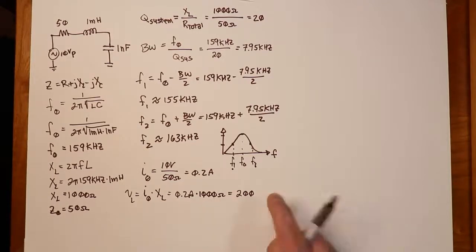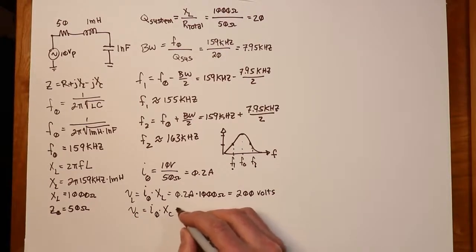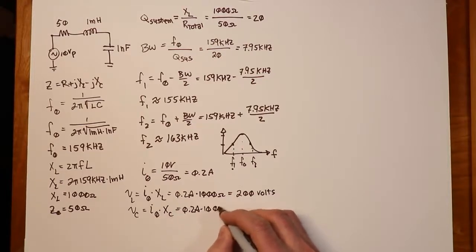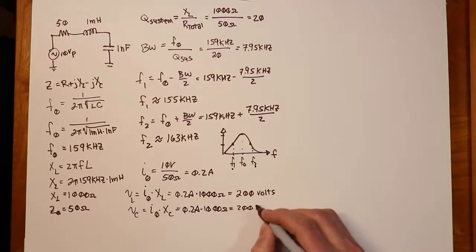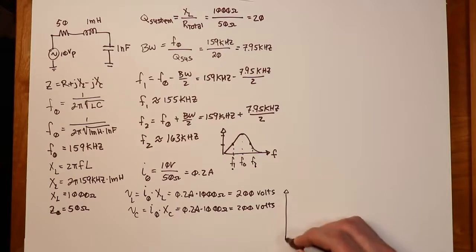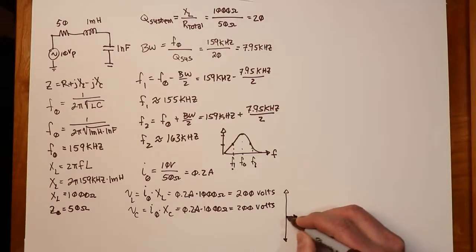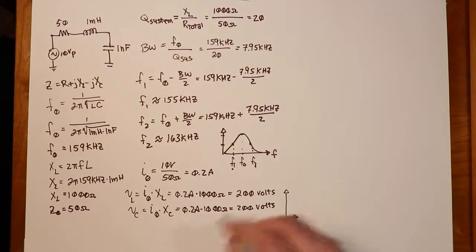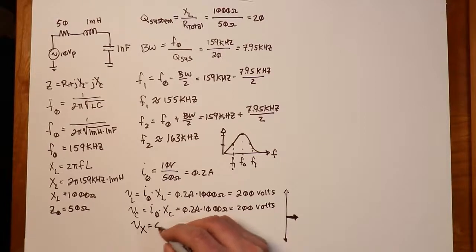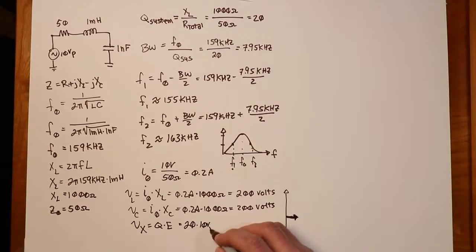V_L is at +90 degrees (plus j), so the magnitude is 200 volts. Similarly, V_C has the same magnitude but at −90 degrees (minus j) — still 200 volts. These cancel out. In a phasor diagram you'd see 10 volts on the resistor, 200 volts on the inductor, and 200 volts on the capacitor — the two verticals cancel, leaving only the real part. Alternatively, the voltage across the reactive components V_X = Q × V_source = 20 × 10 = 200 volts peak.